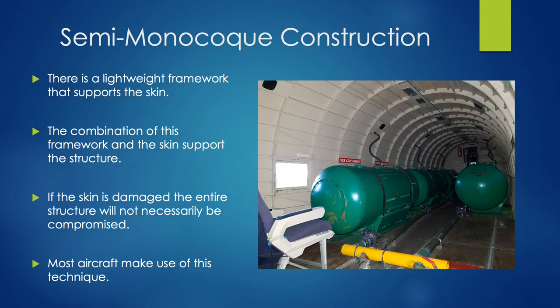Then we have a semi-monocoque construction. The way this works is there's a lightweight framework inside which supports the skin, and it's the combination of the framework and the skin itself which gives the structure strength. So it's a combination of formers and skin that improves the strength of any structure. If the skin is damaged, that means the whole structure won't necessarily be compromised in strength, as it has almost two layers of protectivity. Most aircraft make use of this technique, as it offers the most redundancy if anything were to get damaged.